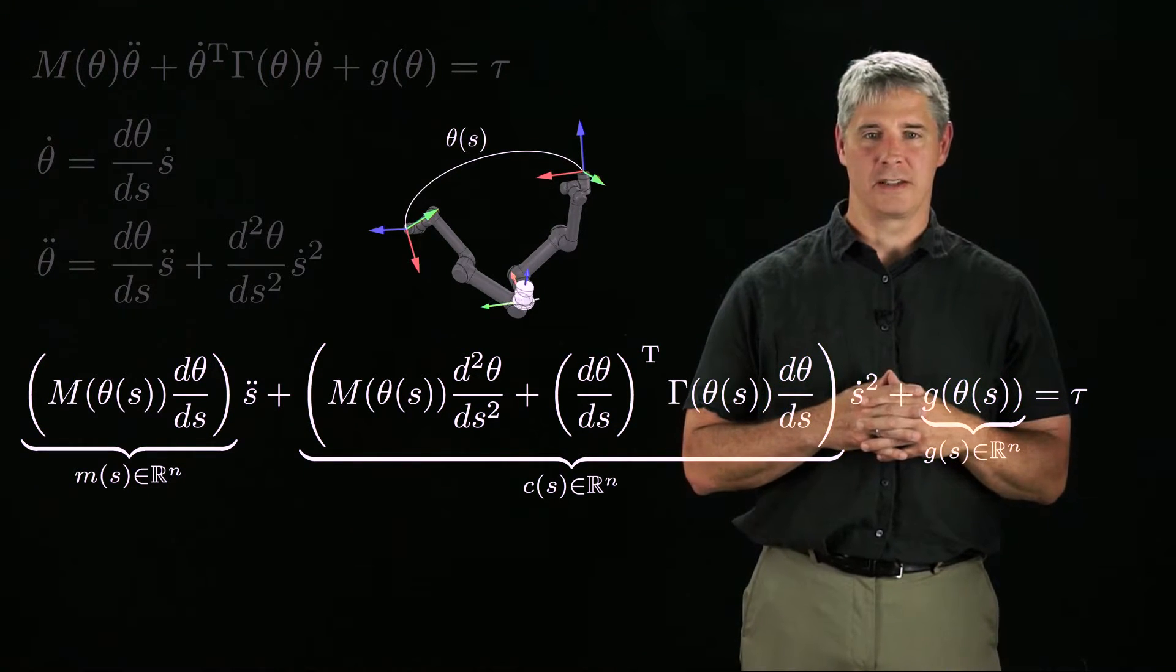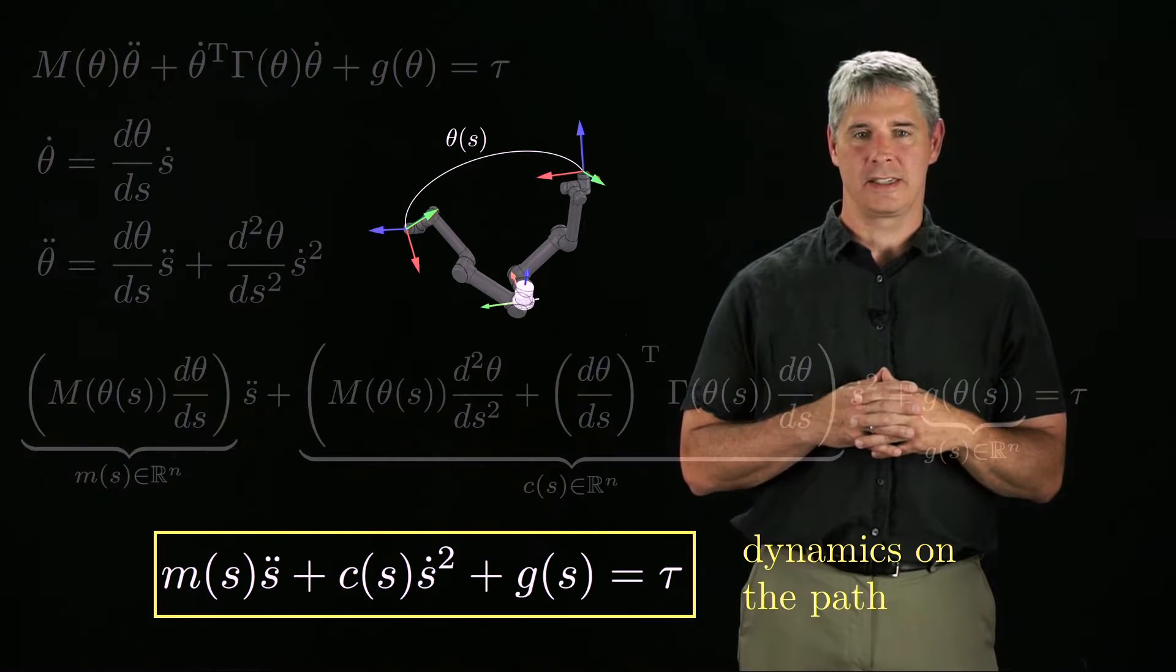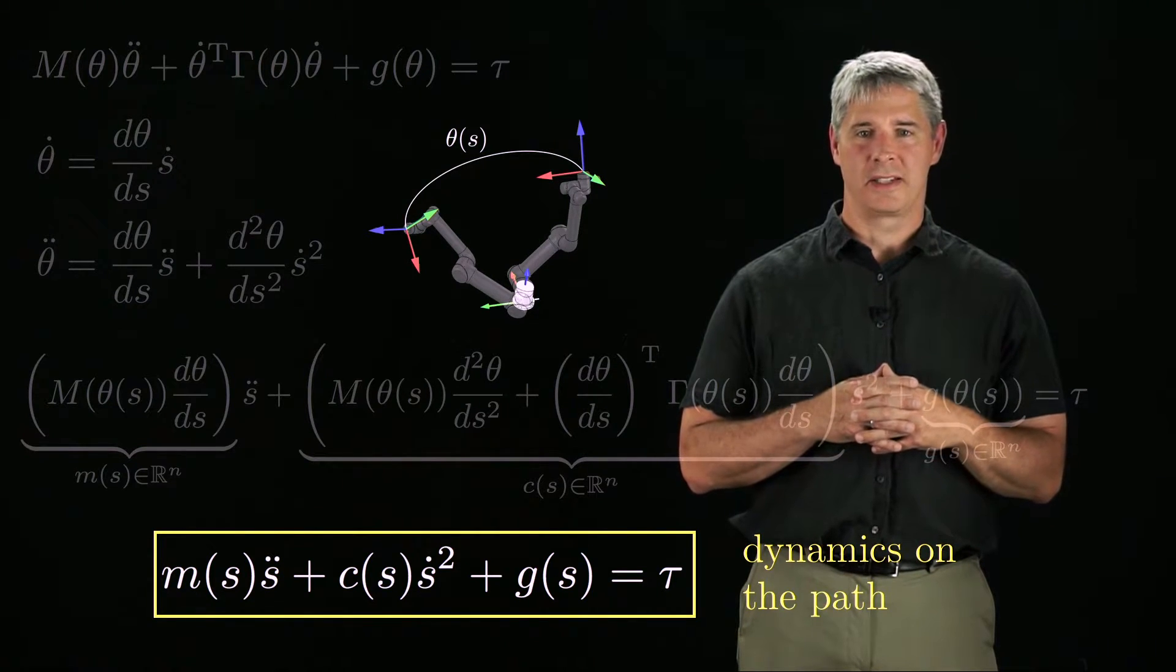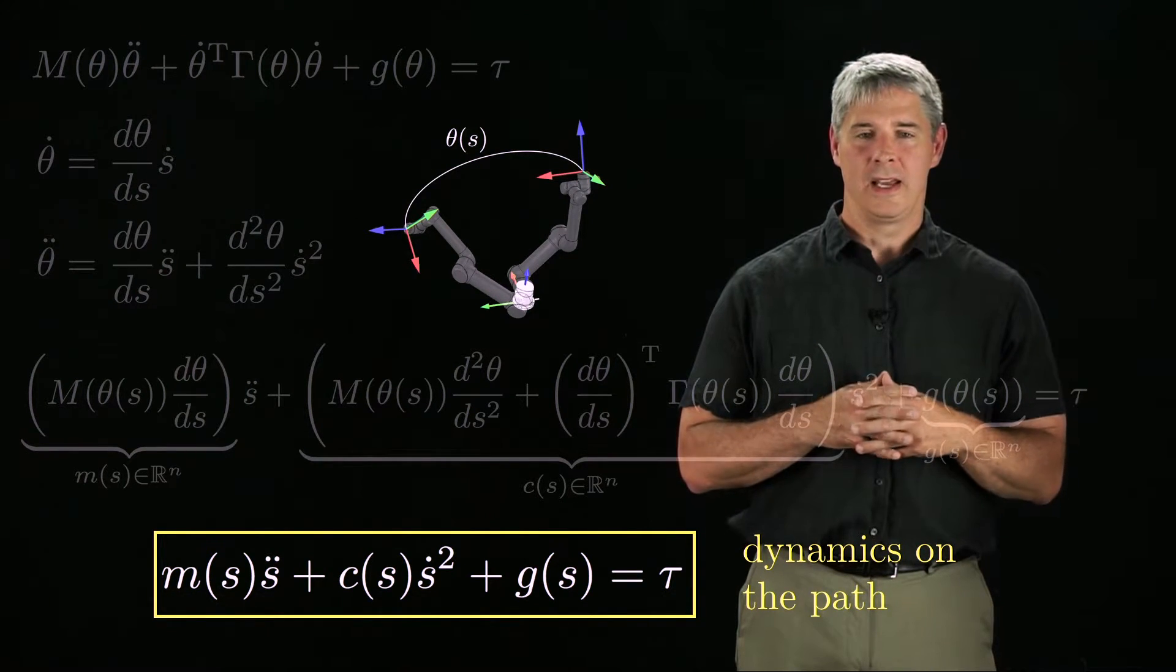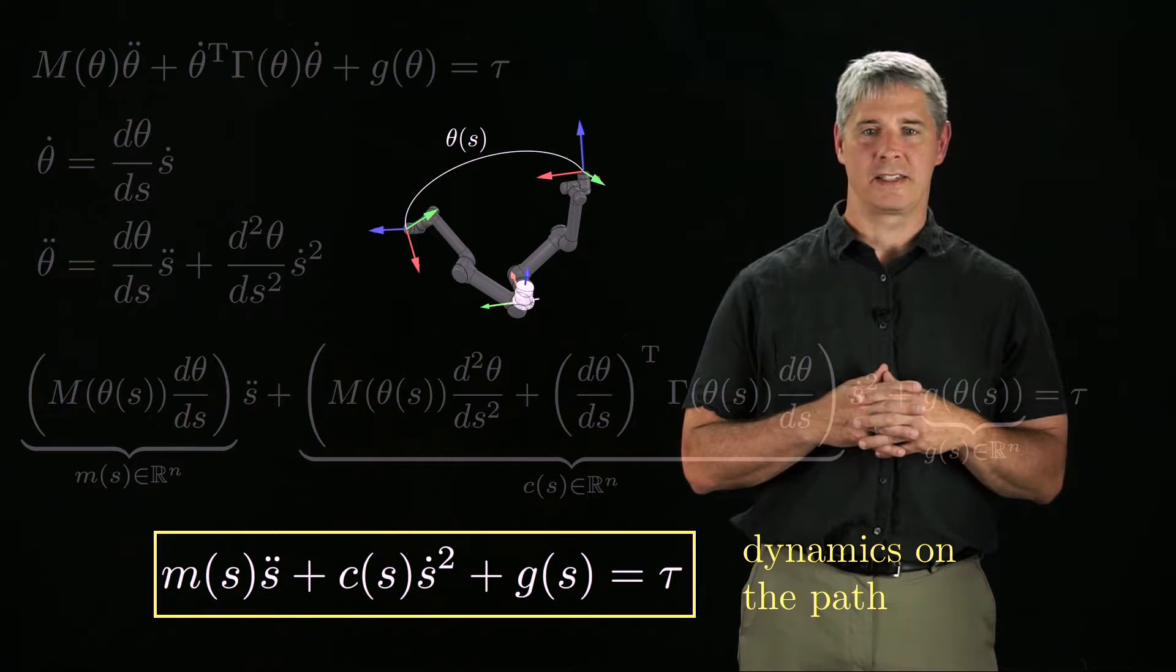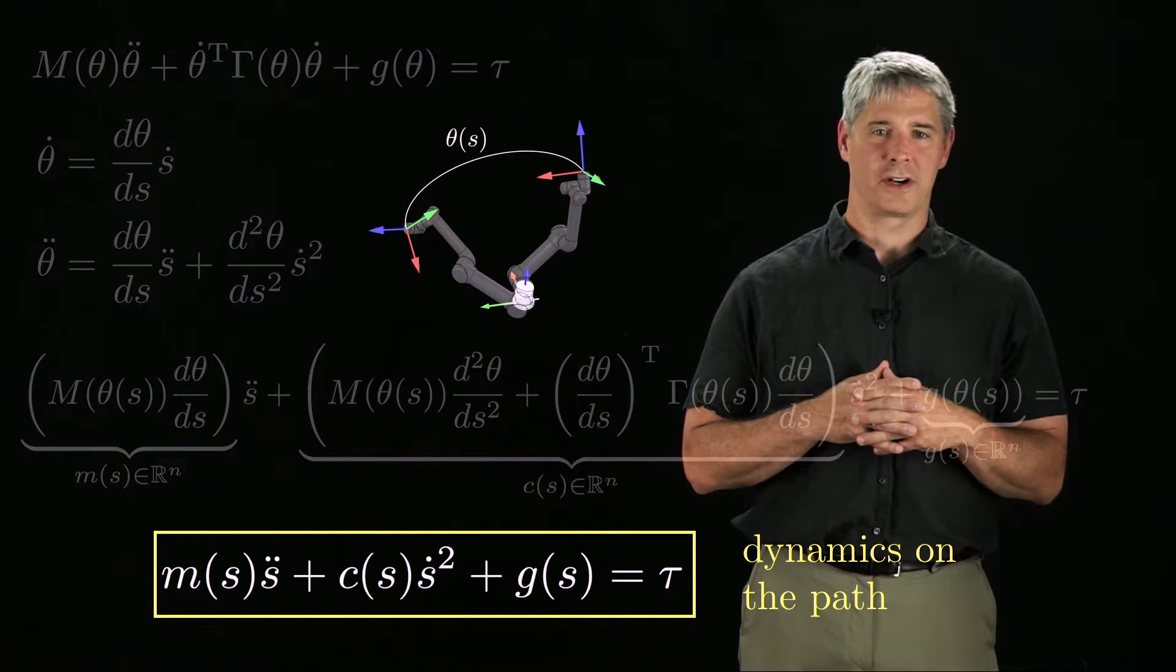We can therefore write this equation as the vector equation m(s) times s double dot plus c(s) times s dot squared plus g(s) equals tau. Each of m(s), c(s), and g(s) is a vector function of s.